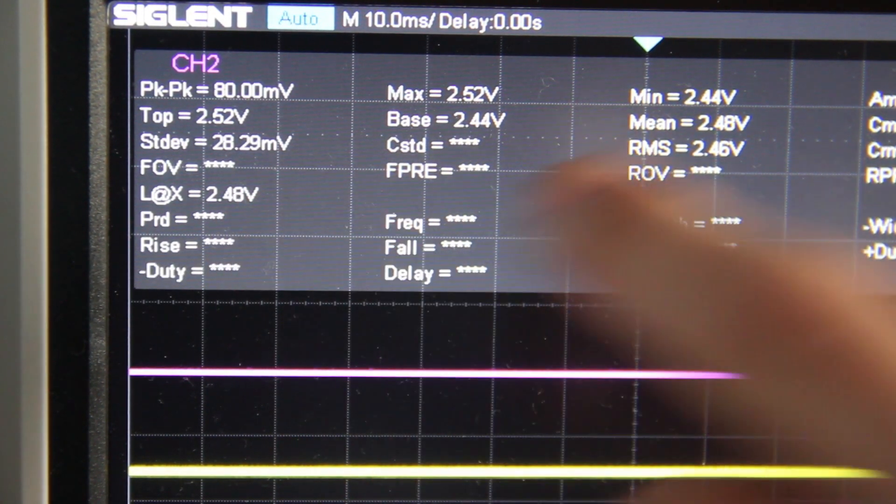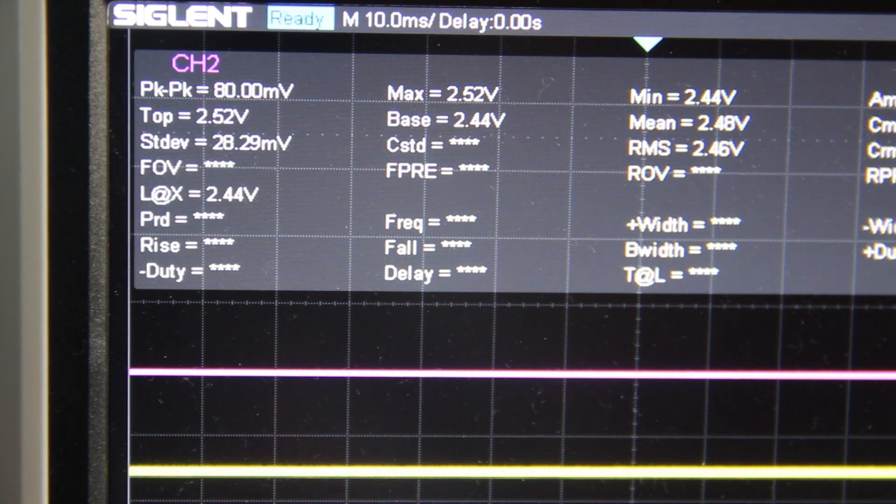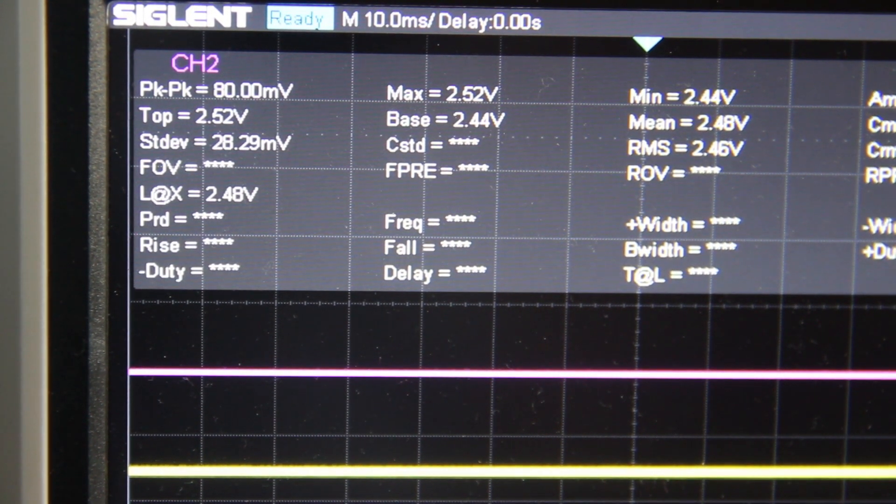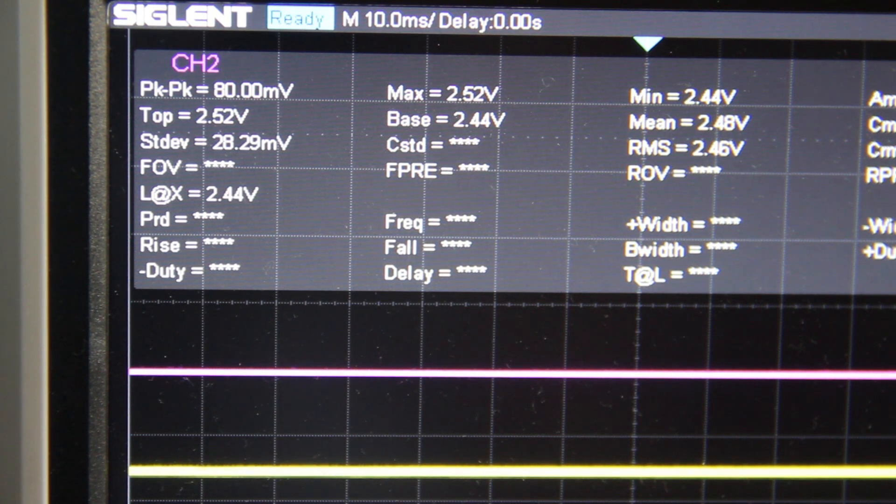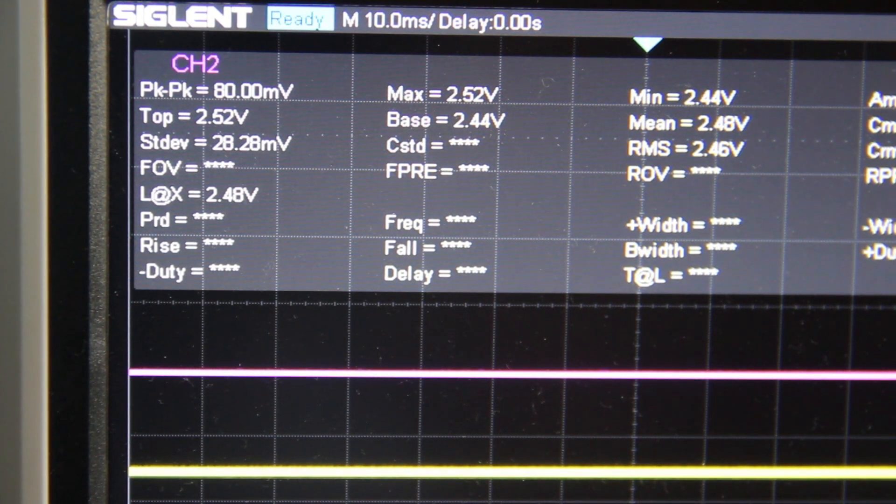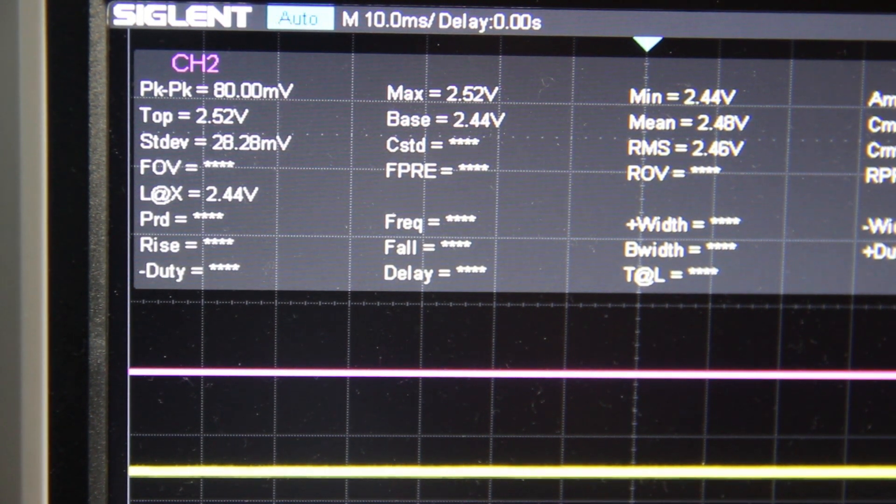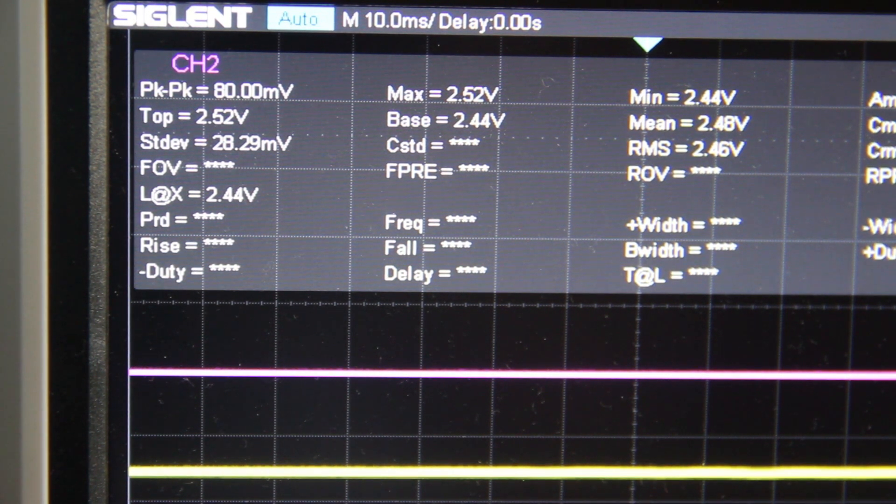So as you can see over here, we've now got a standard deviation of 28.28, and I don't know why it's moving that much right now, because nothing's happening. But when I put my screwdriver under it and pull it up, it increases.